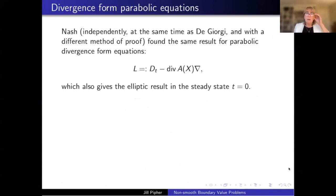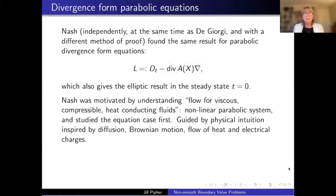Nash independently and at the same time as De Giorgi and with an entirely different method of proof found the same result, this time for parabolic divergence form equations. So a parabolic equation has this form. This part is the elliptic equation, but we're going to subtract that from d by dt, a time derivative. And so Nash's result for equations like this also imply the same result for the elliptic case in the steady state where t is equal to zero.